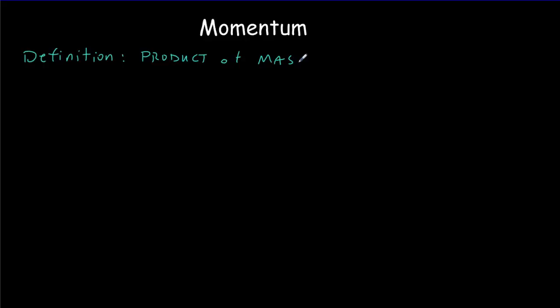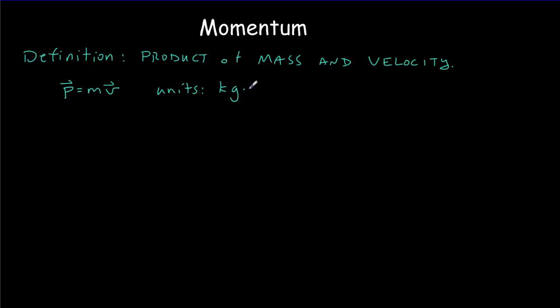As an equation we write P for momentum. Momentum is going to be a vector because it's mass times velocity, and velocity is a vector. The units are the SI units for mass, which is kilograms, times the SI units for velocity, which is meters per second. We've got to remember that this is a vector quantity.